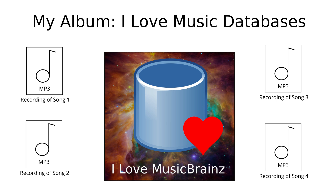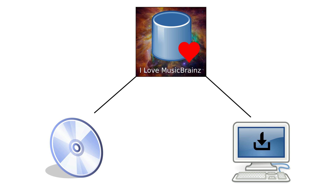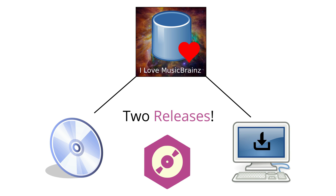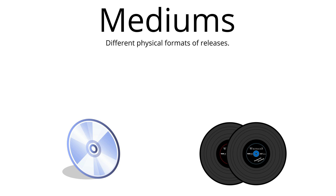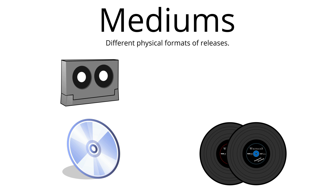Now that I've decided to make it an album with more songs, we eventually have to release them. Releases are how music is distributed. For example, putting out a CD and a digital download on iTunes means I'm putting out two releases. The two formats represent different mediums, which are physical forms I'll release my music in, including CDs, vinyls, cassettes, digital download, and more.